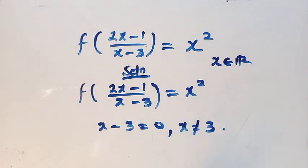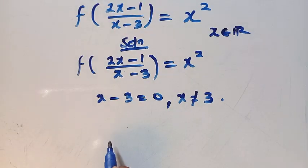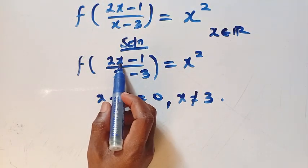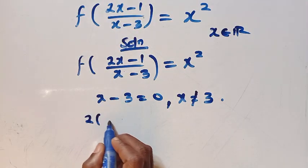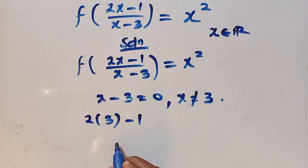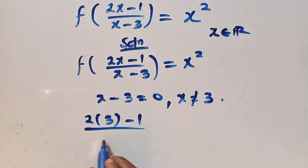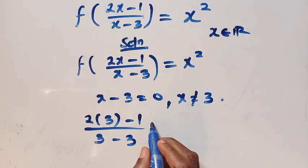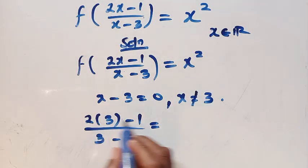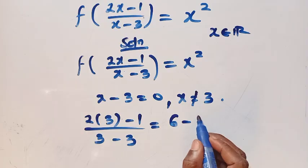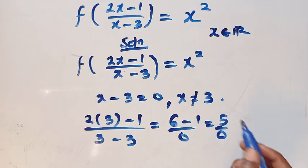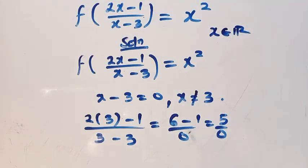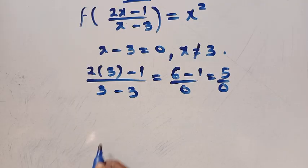That is, x must not equal 3. And how do we know that? Let's substitute x with 3: we get 2 times 3 minus 1, all divided by 3 minus 3, which is 6 minus 1 over 0, that is 5 over 0. And 5 over 0 is not valid. So any other value that is a member of the real numbers works for this domain.